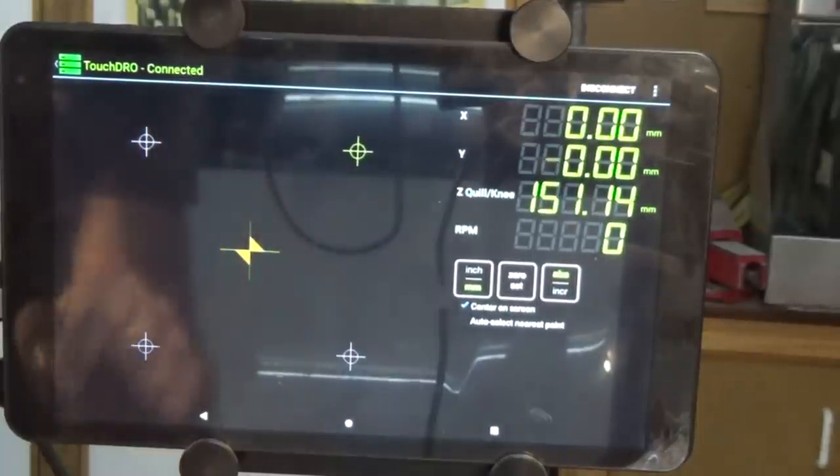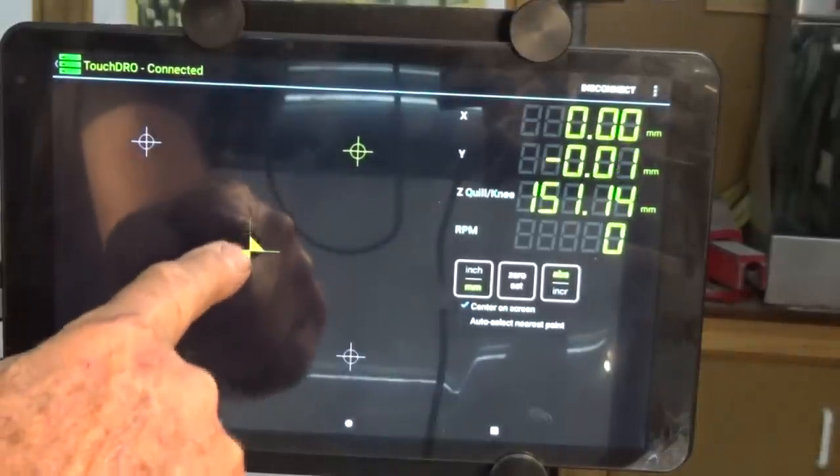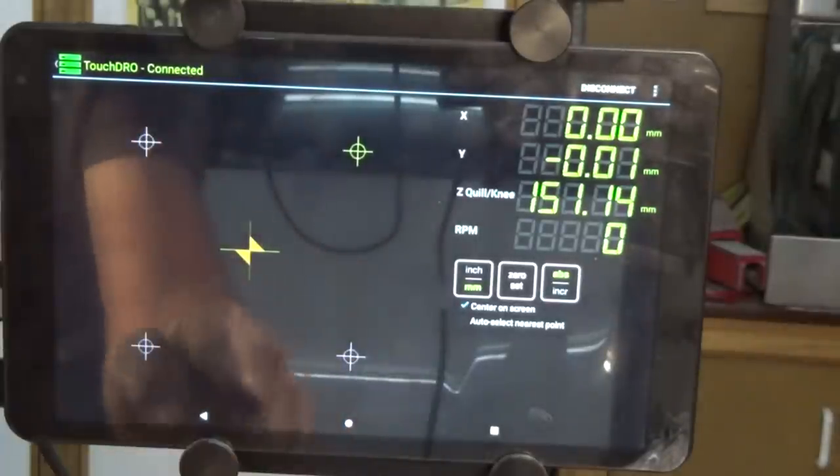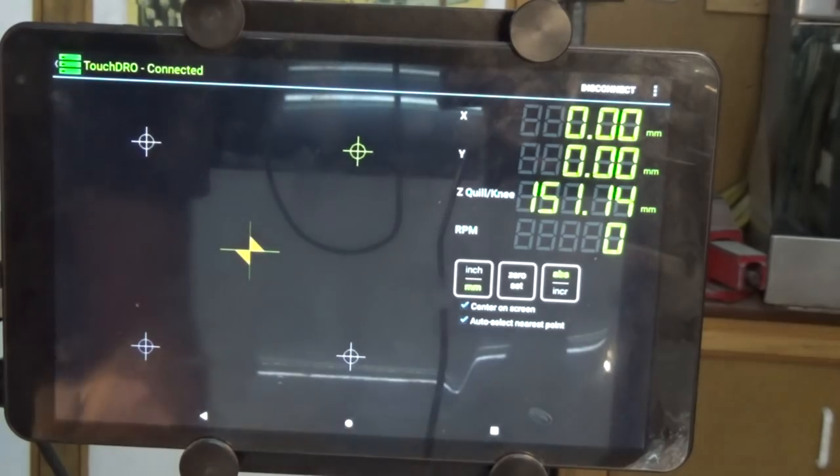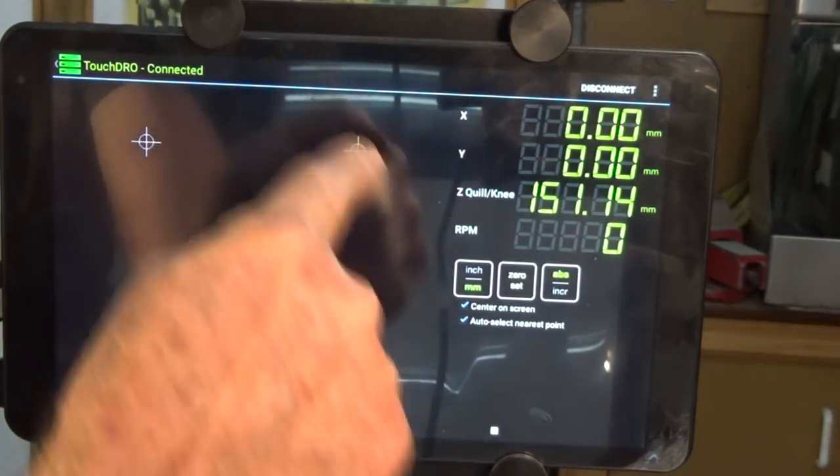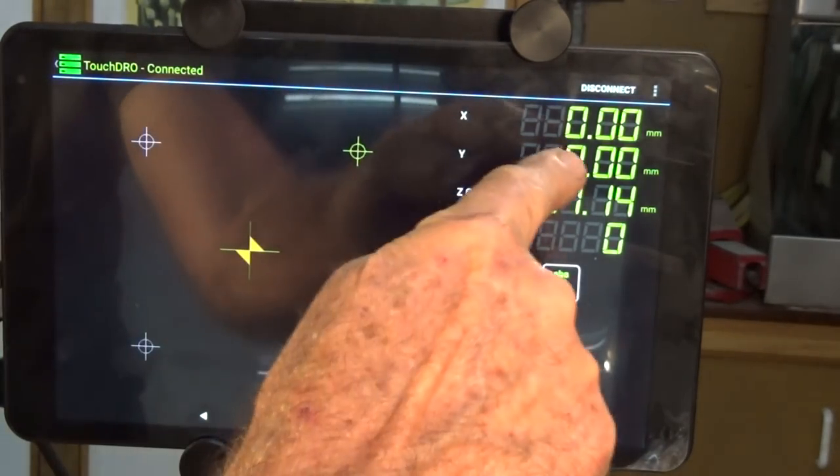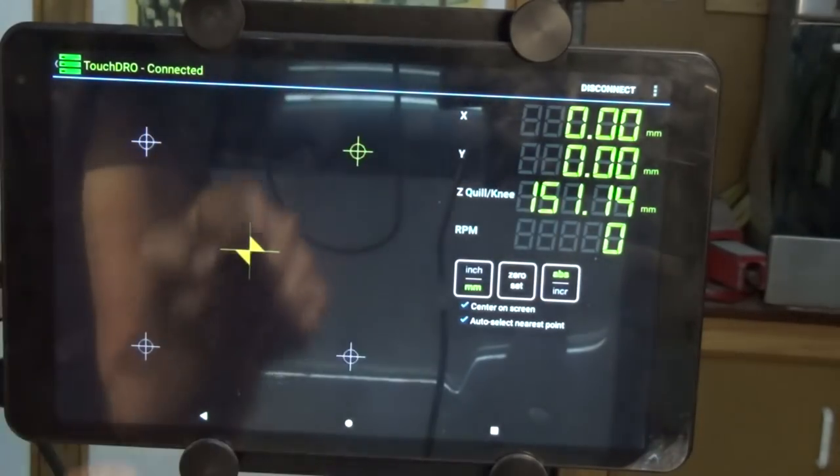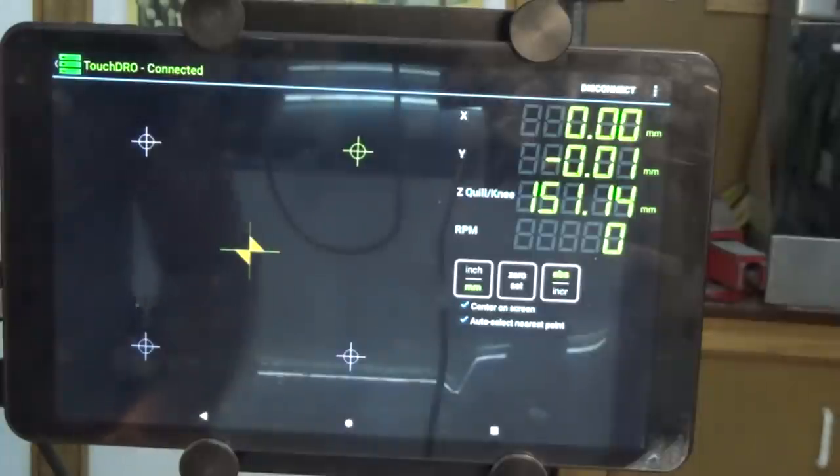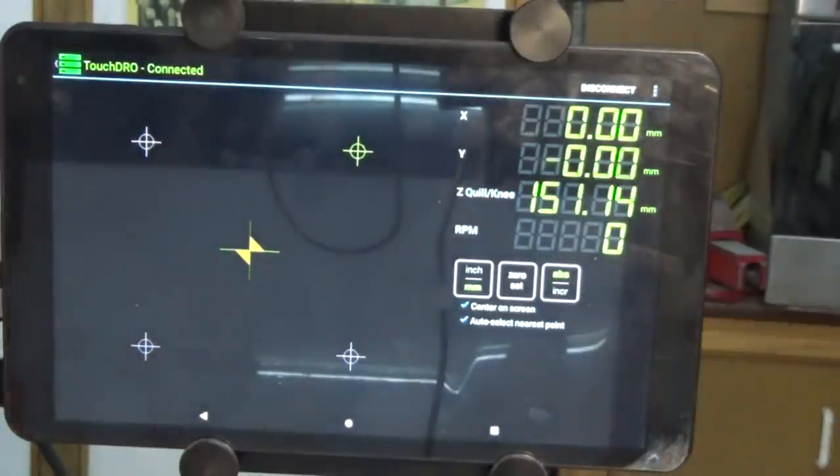I'm using TouchDRO to set off my four holes around that pitch circle diameter. This is the preview of the workspace that I've set up in TouchDRO to do this job. Here we are, right at the very center of the hole pattern at the moment. Here are the four hole centers.